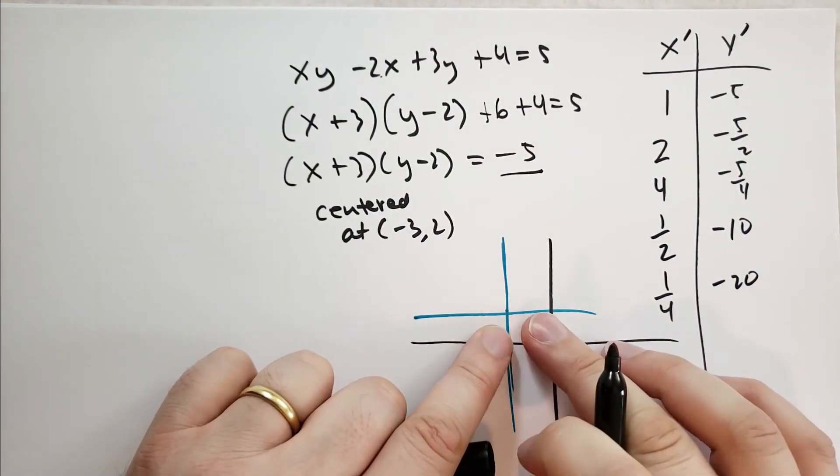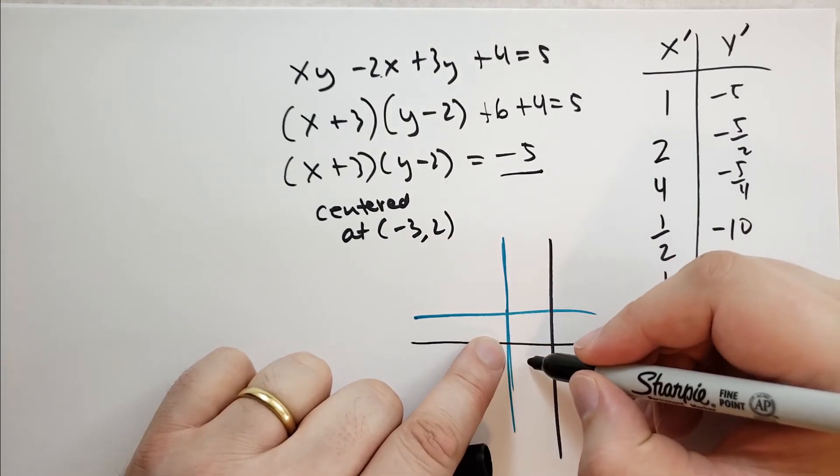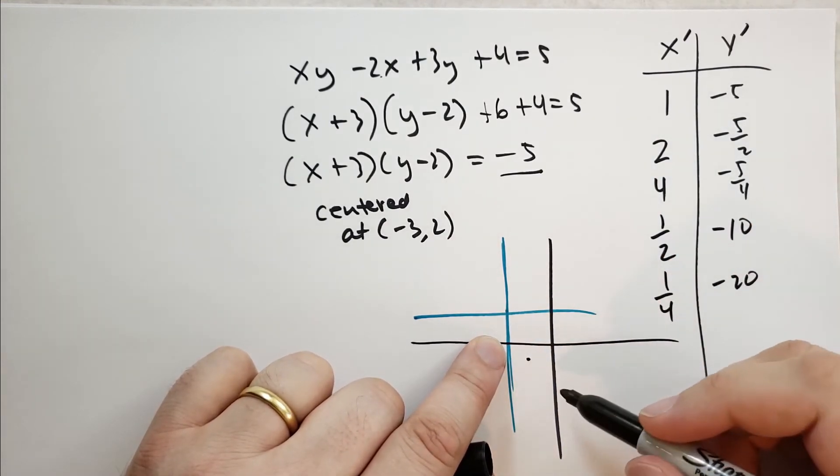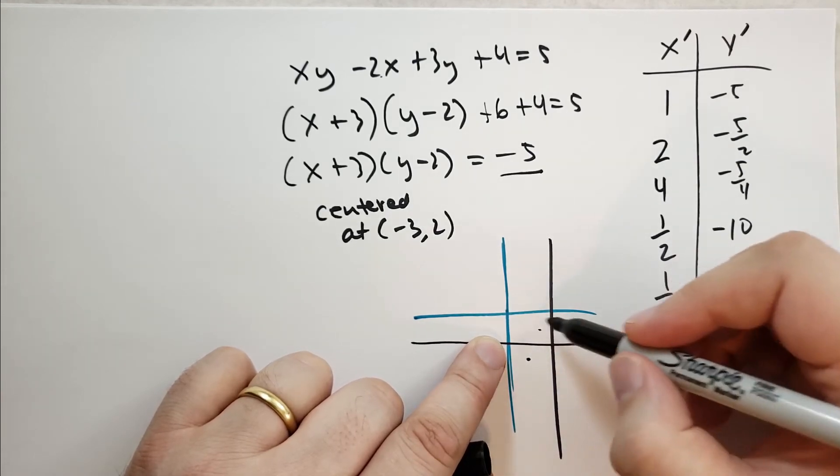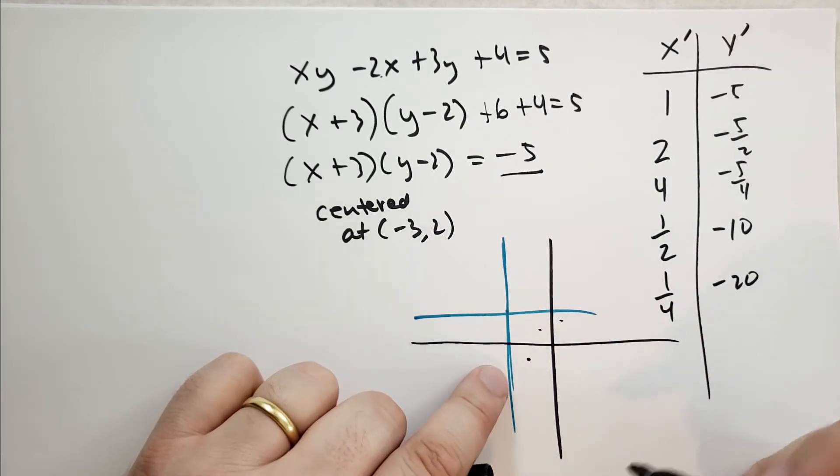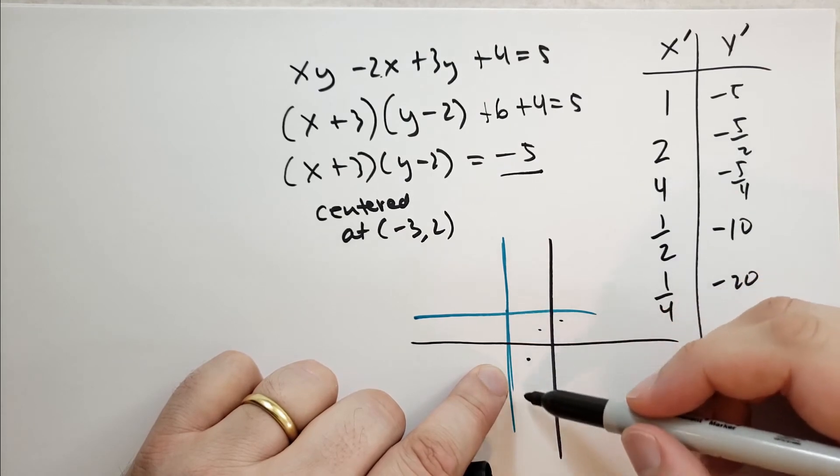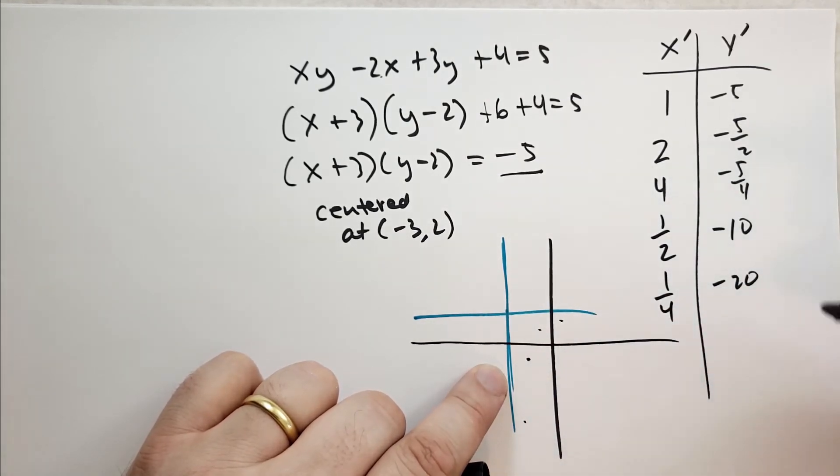And then we have when x prime is 1, y is minus 5. So it's going to be down here. x prime is 2, y is 5 halves. So it's half of that. And when x prime is 4, it's half of that again. And then when x is 1 half, it's going to be 10. It's like way down here and minus 20, which is like way down there.